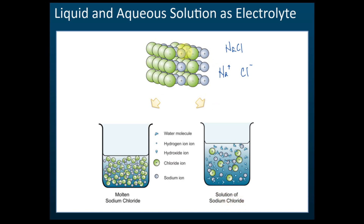For the aqueous solution of sodium chloride: when sodium chloride is added into water and dissolves, the bonds between the ions are broken and the ions become free to move. So in aqueous solution, the ions are free to move, and when the ions are free to move, they can conduct electricity. This explains why an ionic compound can conduct electricity in liquid state and in aqueous solutions.